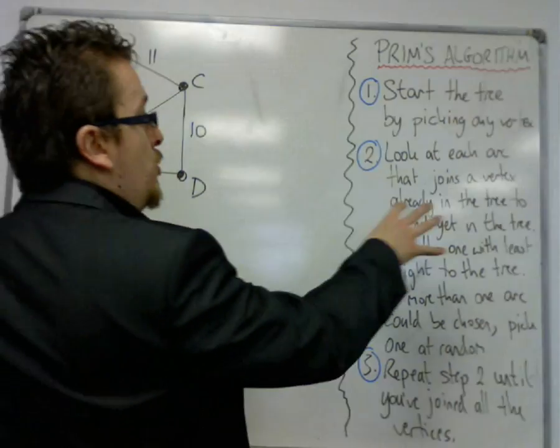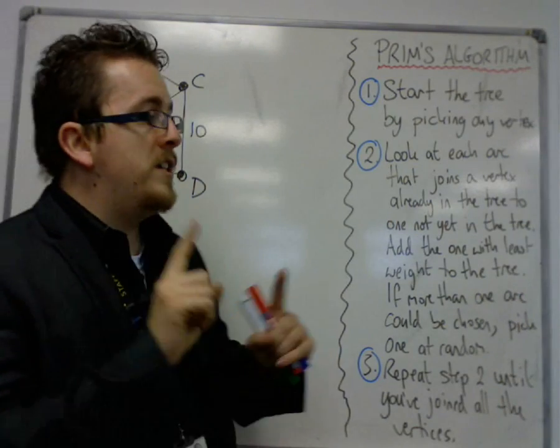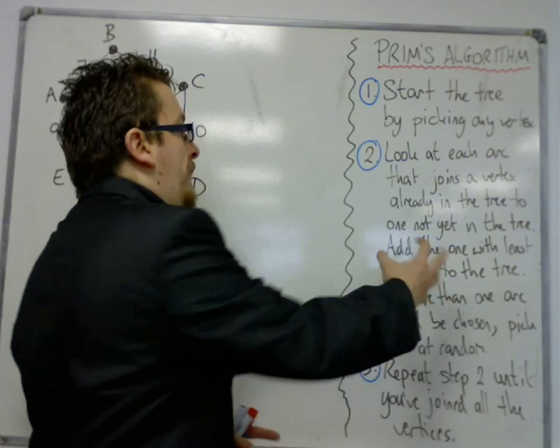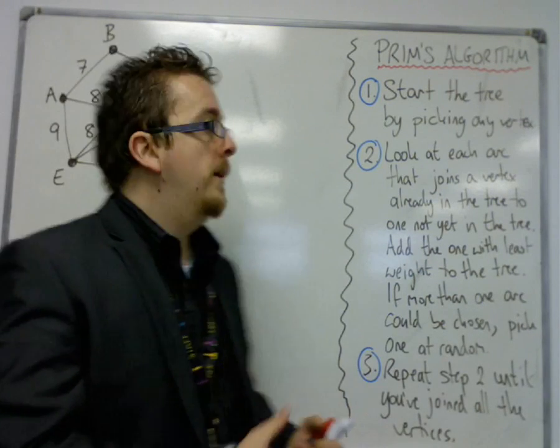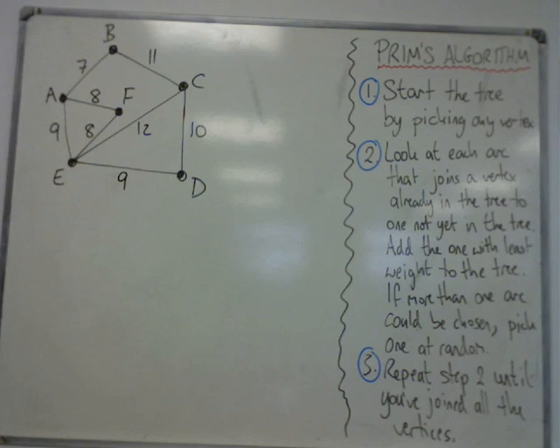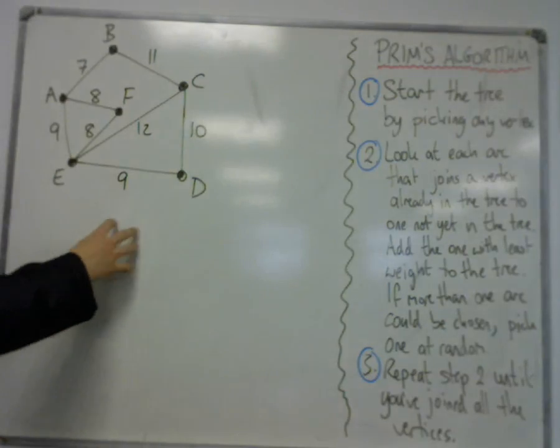Then, you look at each arc that joins a vertex already in the tree to one not yet in the tree. This concept here is something that students find quite difficult to grasp. So what I'm going to do is I'm going to start by looking at this example.